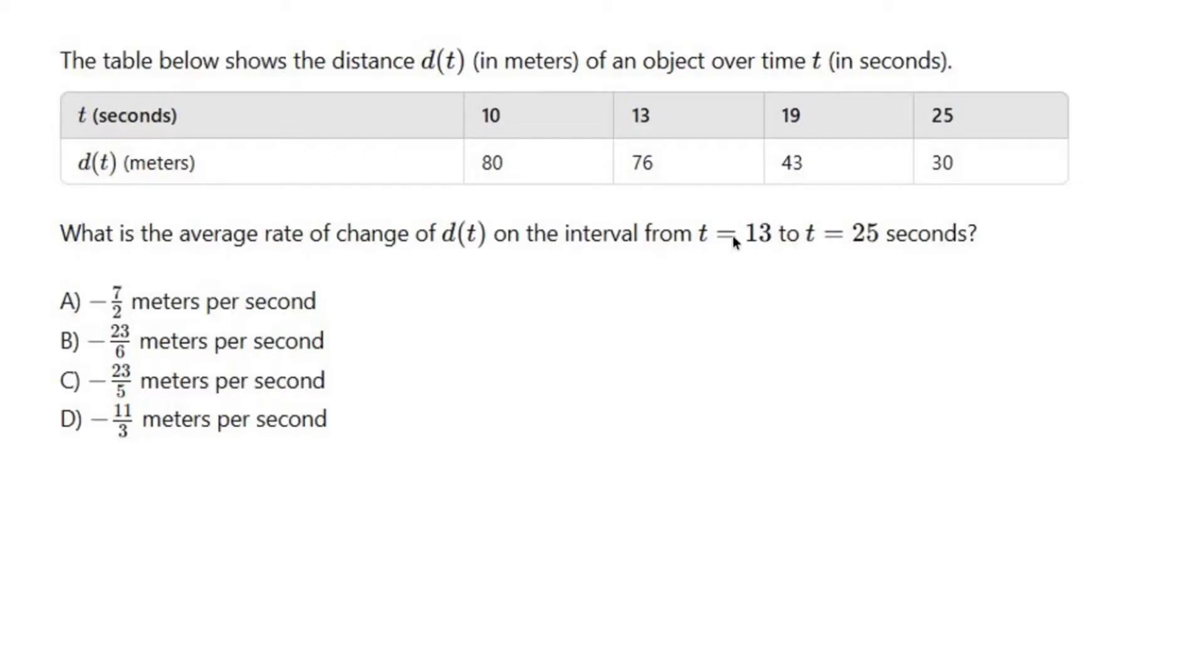This is what we're trying to find, the average rate of change. Now the general formula for average rate of change is f(b) minus f(a) over b minus a. Obviously in this case we don't have f's, we have d's. So this would be d(b) minus d(a) over b minus a.